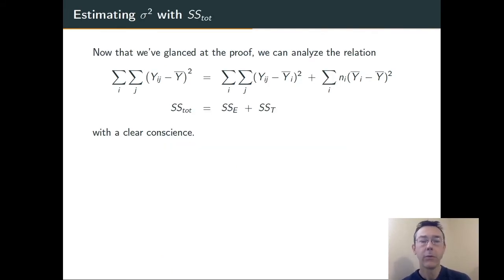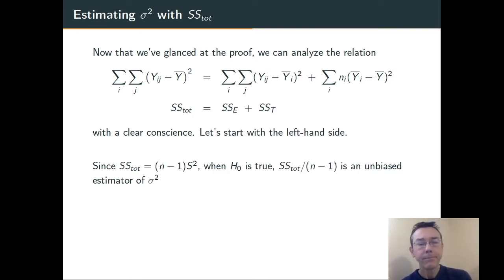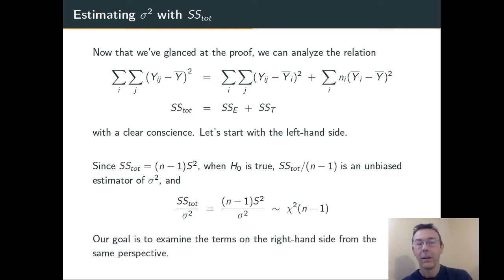Now that we've justified the Total Sum of Squares equals error sum of squares plus treatment sum of squares, we can actually analyze this relationship with a bit more of a clear conscience. The Total Sum of Squares is the scaled sample variance, and therefore, we should be able to use it as an estimator of population variance. To say that a little bit differently, if I take the Total Sum of Squares, divide by the population variance, sigma squared, I'm really getting n minus 1 times the sample variance over the population variance. I'm going to have a random variable with a chi-square distribution with n minus 1 degrees of freedom. The idea now is that we understand the left-hand side as a chi-square distribution. We'd like to do the same thing with the right-hand side.